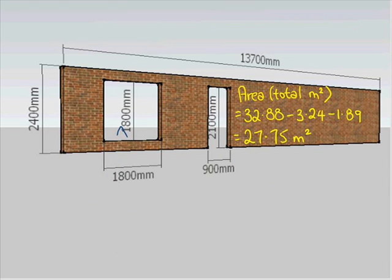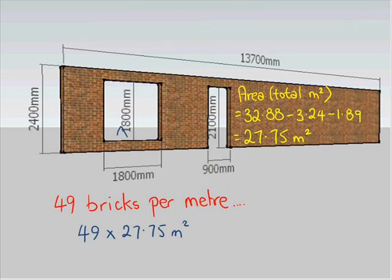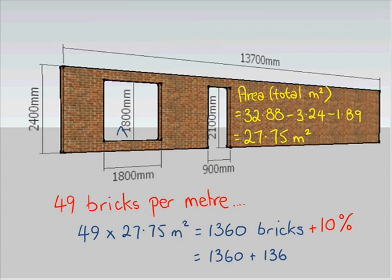We'll take this problem just one little step further. Say that you get 49 bricks per square metre. Well, how many bricks are you going to need for the entire job? So what we have to do is get 49 and times it by that 27.75, which gives us 1,360 bricks. Now we'll add a 10% wastage to this. So 10% of 1,360 is 136. So 1,360 plus 136 means all up we'd need 1,496 bricks for this lovely wall here.